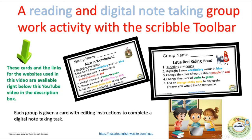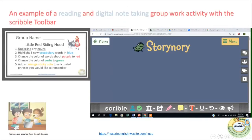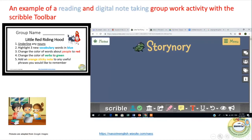For example, as you can see here I'm sharing two cards that I have done with my learners. One of them is a story about Little Red Riding Hood that they read on an online website. While reading, they need to underline any nouns, highlight three new vocabulary words in blue, change the colour of words about people to red, change the colour of verbs to green, and add an orange sticky note to any useful phrases they would like to remember. These cards are also available in the video description box below for you to download and use with your learners.